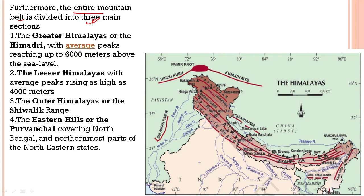The first section is the Greater Himalayas, where average peaks rise as high as 6000 meters above sea level. Next we see the Lesser Himalayas, with average peaks rising as high as 4000 meters. Then we have the Outer Himalayas or the Shivaliks, where we find most of the hills. Then we have the Eastern Hills or the Purwanchal, covering north Bengal and the northernmost parts of the northeastern states.